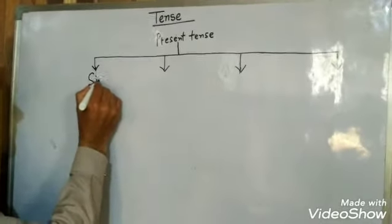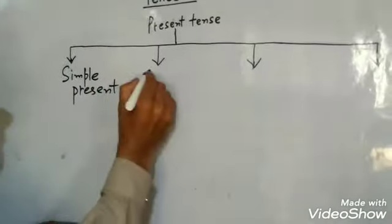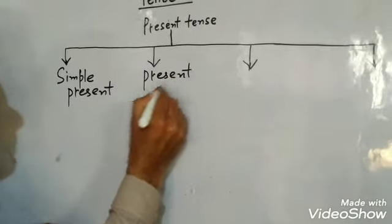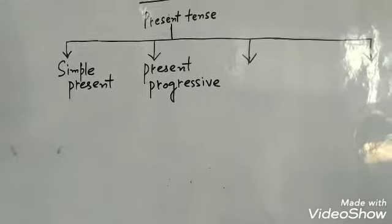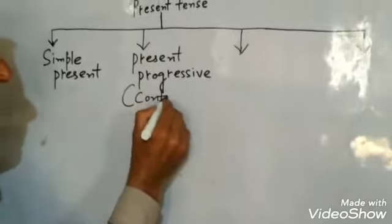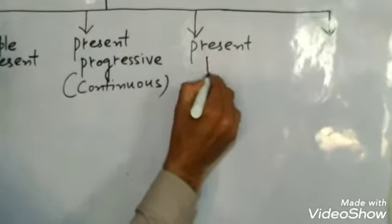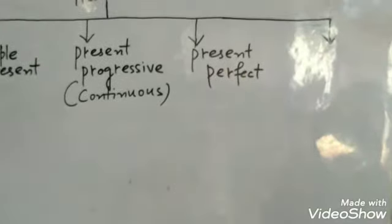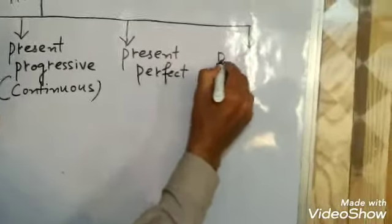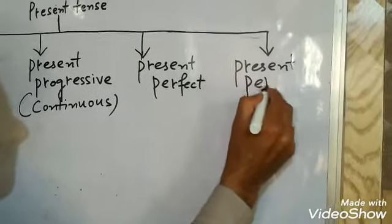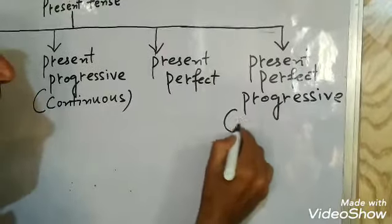Number one is simple present. Number two is present progressive, or we can say present continuous. Number three is present perfect. And number four is present perfect progressive, or present perfect continuous tense.